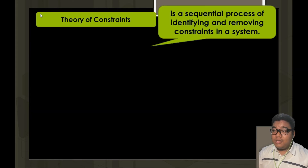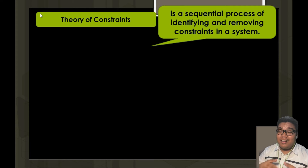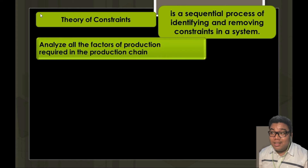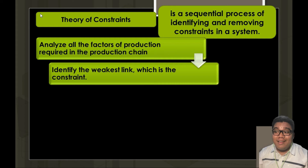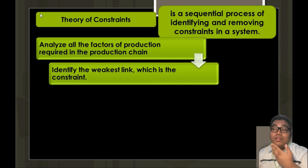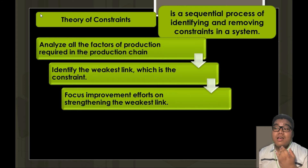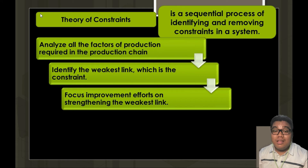The theory of constraints is a sequential process of identifying and removing constraints in a system. Constraints are bottlenecks — activities in an organization that cause inefficiency. To apply this, we analyze all factors of production required in the production chain. Ultimately, there will be one item that limits production, which is what we call the constraint, and we focus our efforts on improving this weakest link.